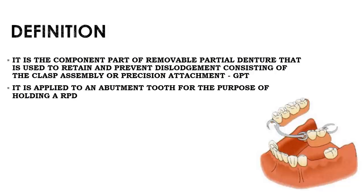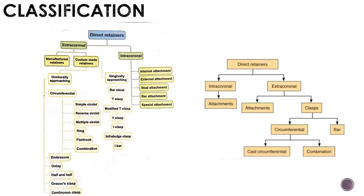Classification: direct retainers are extracoronal (outside the crown) and intracoronal (inside the crown). Extracoronal are manufactured retainers and custom-made. Custom-made are divided into two types: occlusally approaching and gingivally approaching. Occlusally approaching includes circumferential, embrasure, half-and-half, Graso, and continuous clasp.